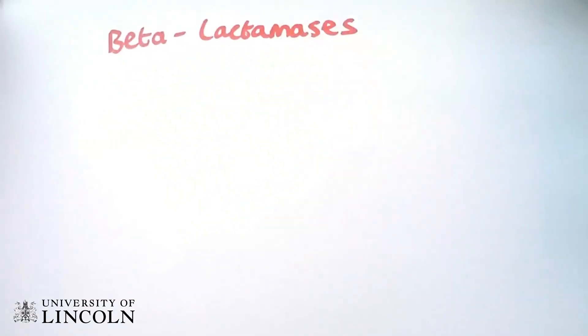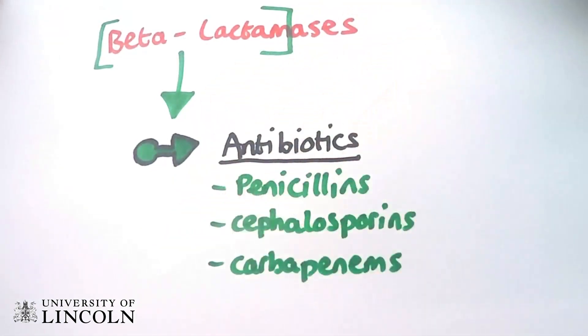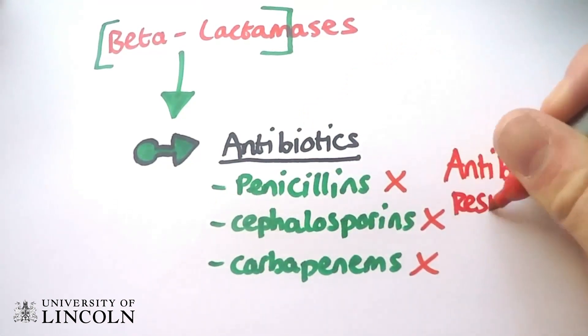The name beta-lactamase is derived from the enzyme's action on beta-lactams, a class of antibiotics which include penicillins, cephalosporins, and carbapenems. Beta-lactamases inactivate these antibiotics, resulting in bacteria with antibiotic resistance.